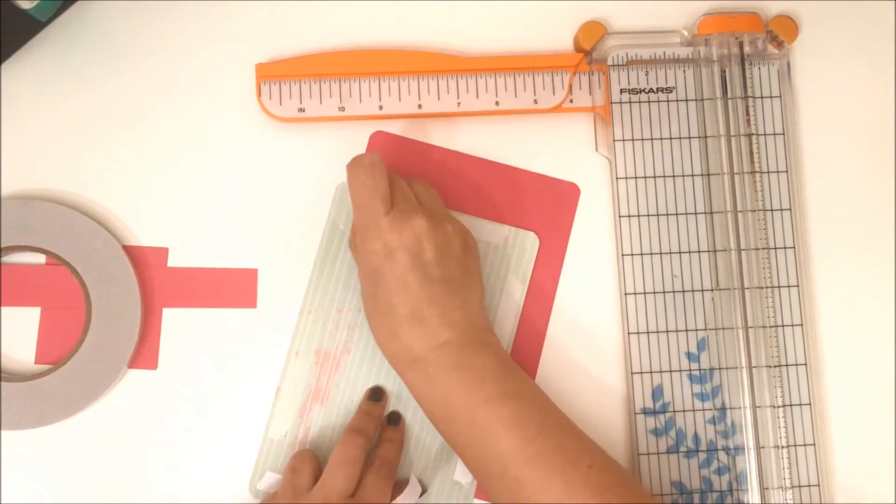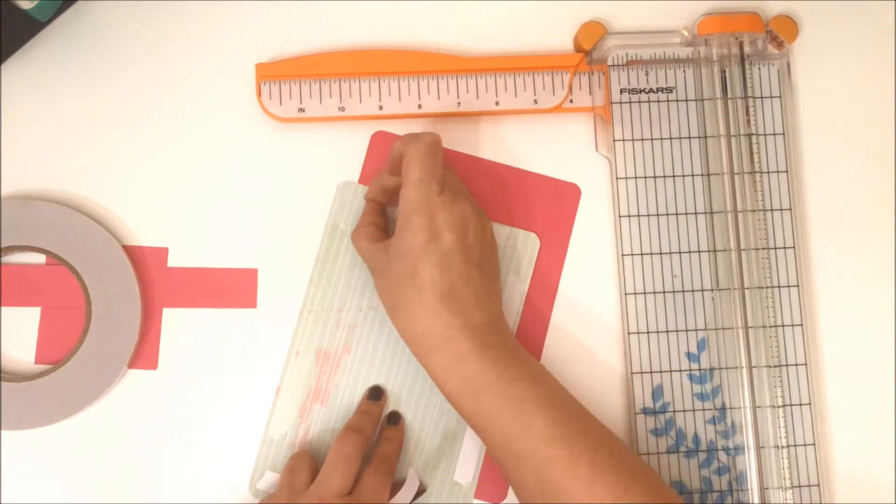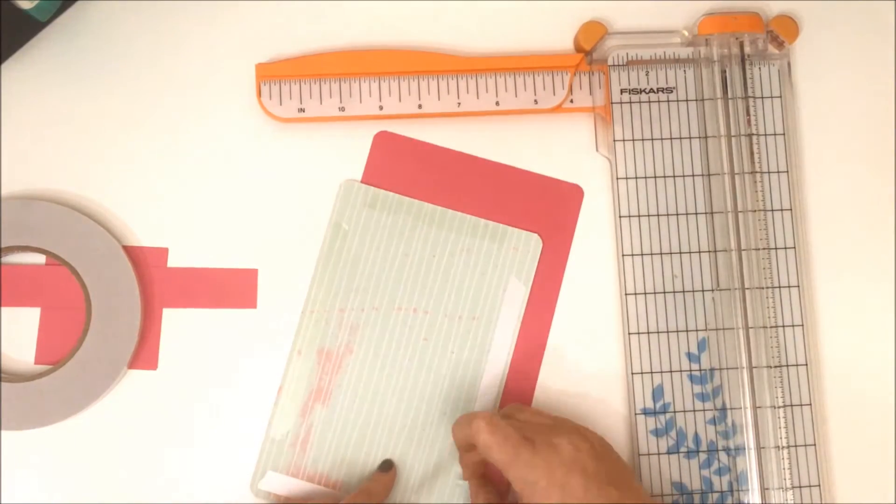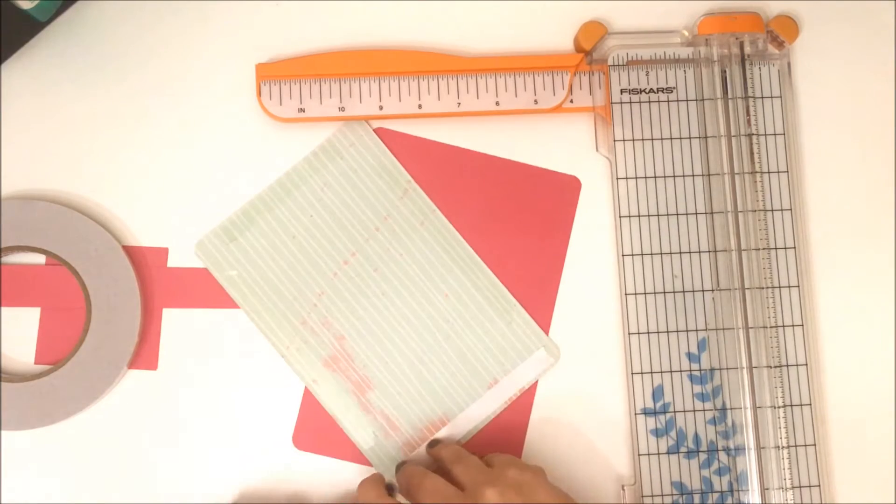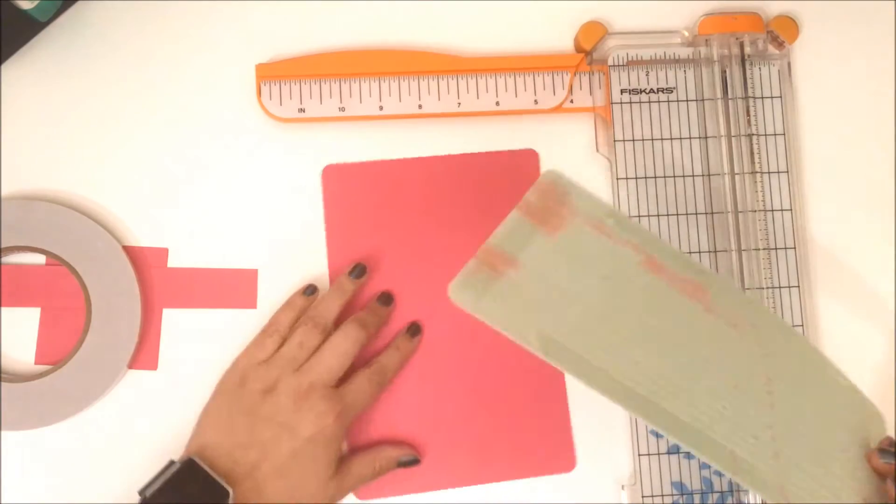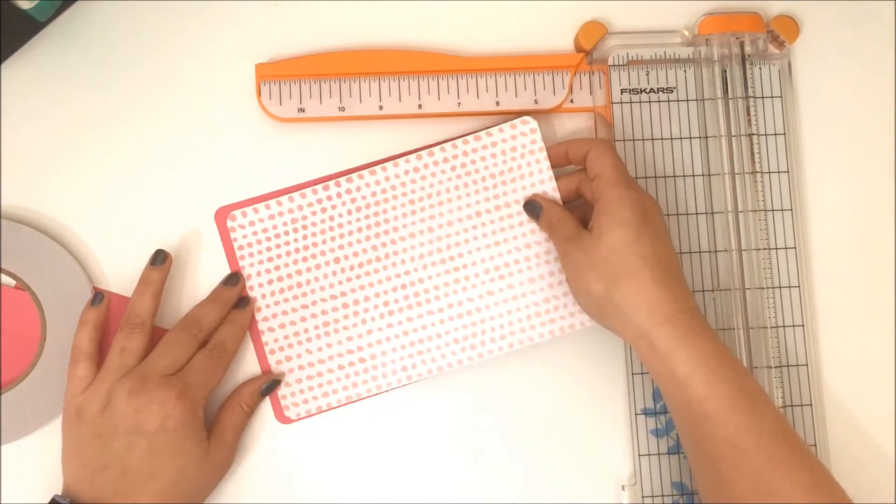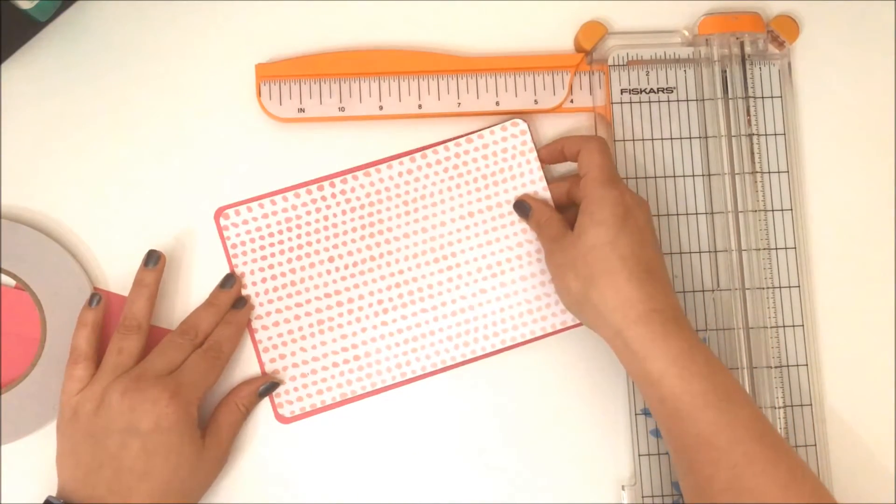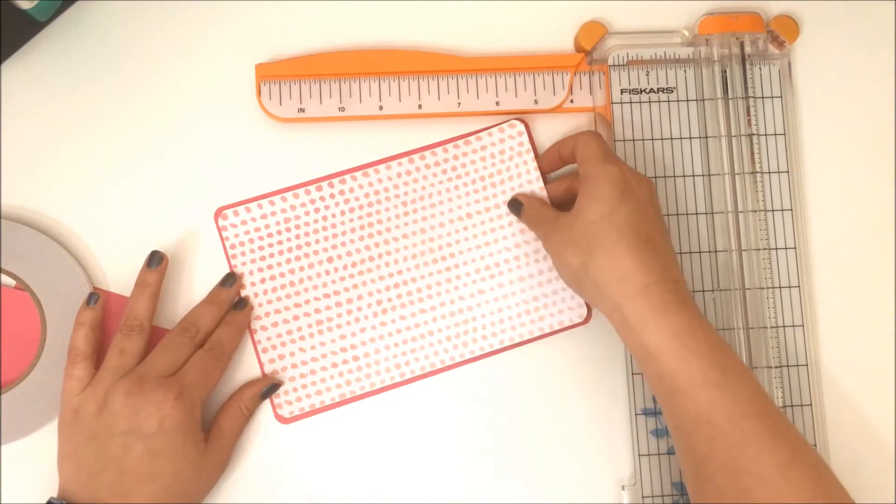This is kind of an optional step. You wouldn't have to do this if you just wanted to use plain cardstock or patterned paper. There's no benefit to having the double thickness of paper. I just liked the way it looked having the pink edging, but it's totally optional.